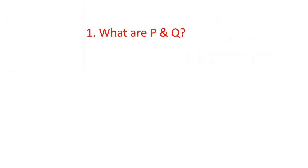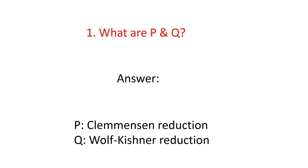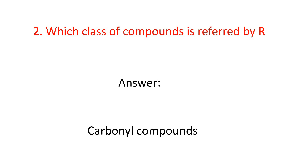First question: what are P and Q? The answer is P is Clemmensen reduction and Q is Wolff-Kishner reduction. Second question: which class of compounds is referred to by R? The answer is carbonyl compounds.